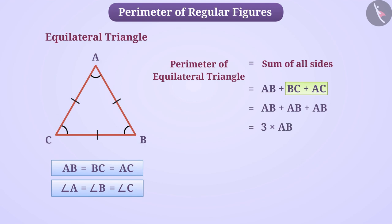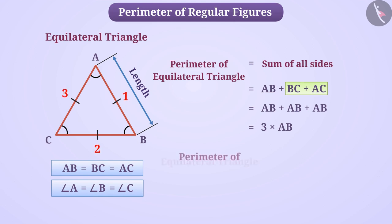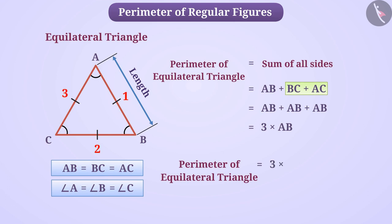In this way, the perimeter of an equilateral triangle is equal to AB + AB + AB, which is equal to 3 multiplied by AB. We can also say that, just like a square, the perimeter of an equilateral triangle is the length of one side multiplied by the number of its sides — that is, the perimeter of an equilateral triangle is equal to 3 multiplied by the length of one side.